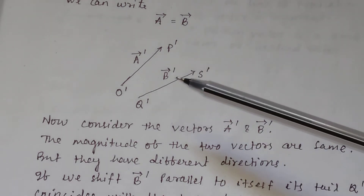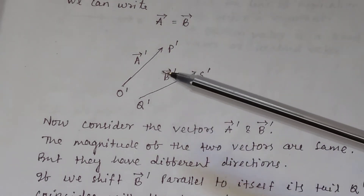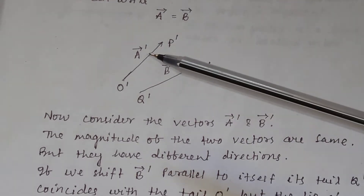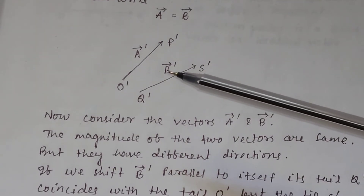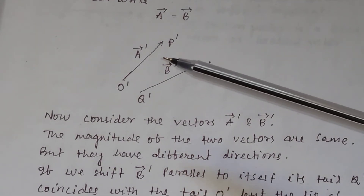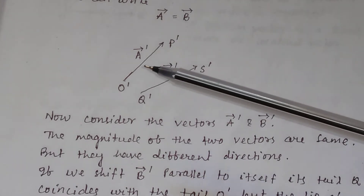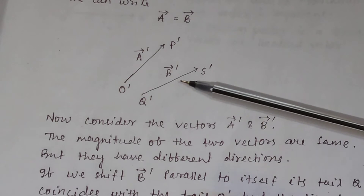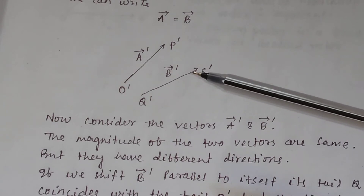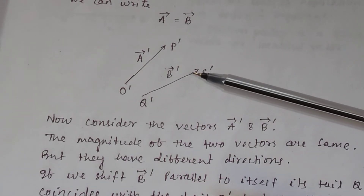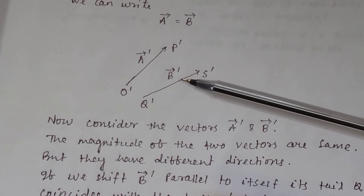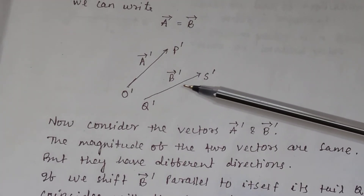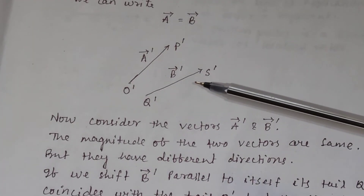In this figure, there are two vectors A prime and B prime. The magnitude of the two vectors are the same — the magnitude of vector A prime is equal to the magnitude of vector B prime. But here you see they have different direction; the direction of A prime is different from the direction of B prime.